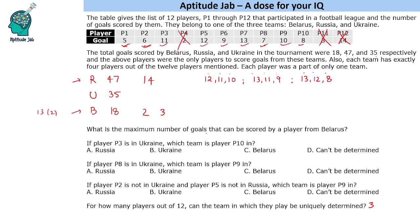The next question: what is the maximum number of goals that can be scored by a player from Belarus? We know 2 plus 3 is fixed, and then we can have either {5, 8} or {6, 7} for the remaining two spots. So the maximum a Belarus player can score is 8 goals.